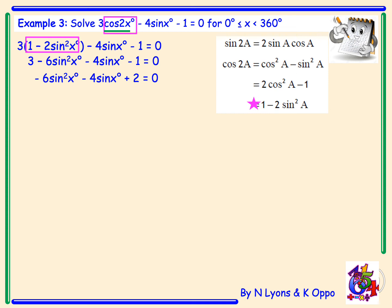We now have a quadratic trig expression to factorize and solve for x. To avoid a negative sin²x, we take out a common factor of -2, leaving 3sin²x + 2sinx - 1 = 0. This factorizes to (3sinx - 1)(sinx + 1) = 0.